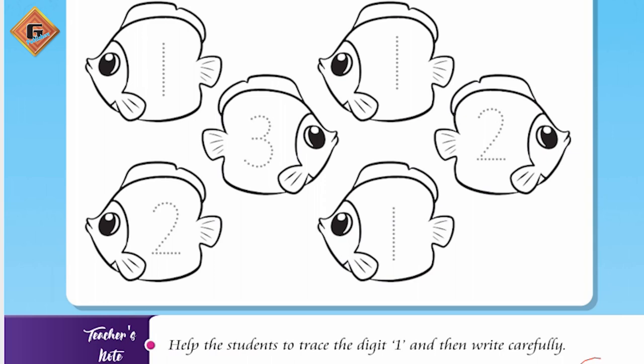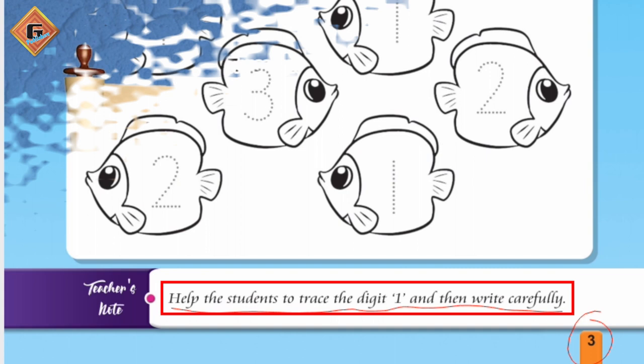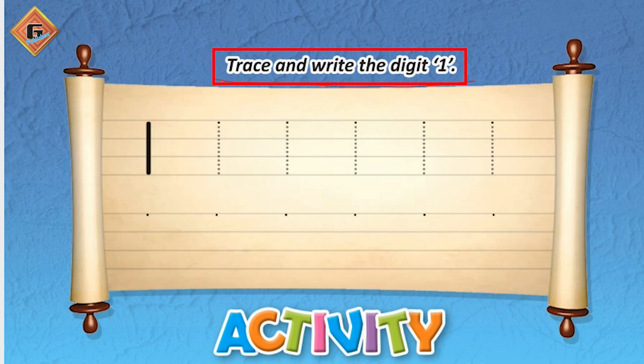Now we're going to start page number three. This is our page number three. Teacher's note: help the students to trace the digit one and then write carefully. What we have to do on page number three — first of all, we have to trace and write the digit one. We have to trace and after that write it with the pencil.